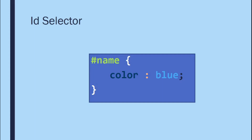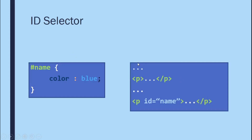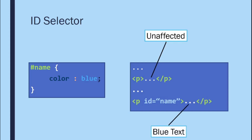The ID selector is represented by the pound/hashtag sign. The key difference from the class selector is that you can only use one ID per HTML element — it must be unique on the webpage. If you assign the same ID to more than one element, you'll get an HTML validation error. In the example, only the element with that specific ID will be affected; others remain unaffected.